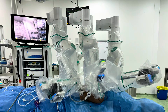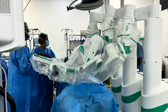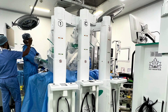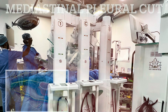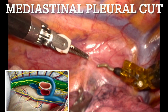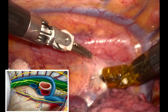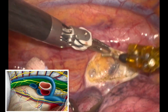Once the ports are placed, the robot is docked from the left side. This is the position of the robot after docking. You can see the vision cart and all the arms, which are far enough apart to avoid any external clashings. We start with division of the mediastinal pleura below the azygos vein near the lung.